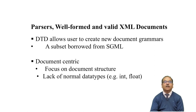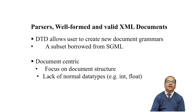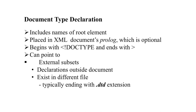DTD allows creating new document grammar. It is a subset taken from the Standardized Generalized Markup Language and always focuses on document structure. There is a lack of normal data types like float — there are no data types like this. The document type declaration always starts with the angle bracket and exclamation sign, then DOCTYPE, and points to the external subset outside the document. It always ends with the .DTD extension when saved.